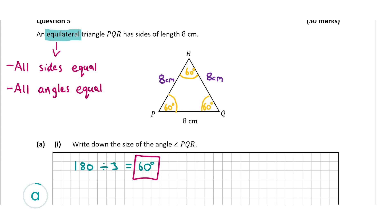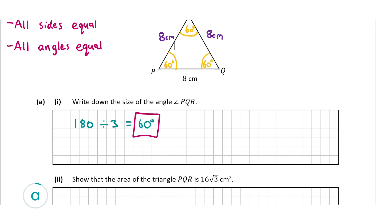Now let's have a look at A part 2. The question wants us to show that the area of triangle PQR is equal to 16 root 3 centimetres squared. We actually have three formulas for the area of a triangle — one on page 18 and two on page 9. The one on page 18 is to do with coordinate geometry, and for that you need the coordinates of the vertices. Since we don't have the coordinates of PQR, we cannot use that formula.